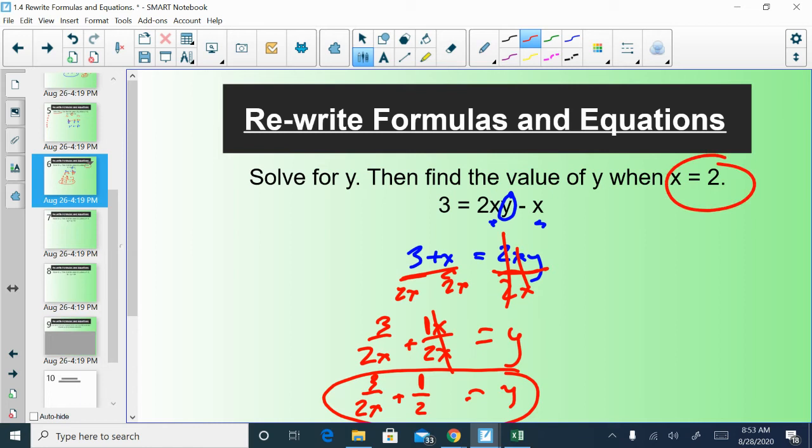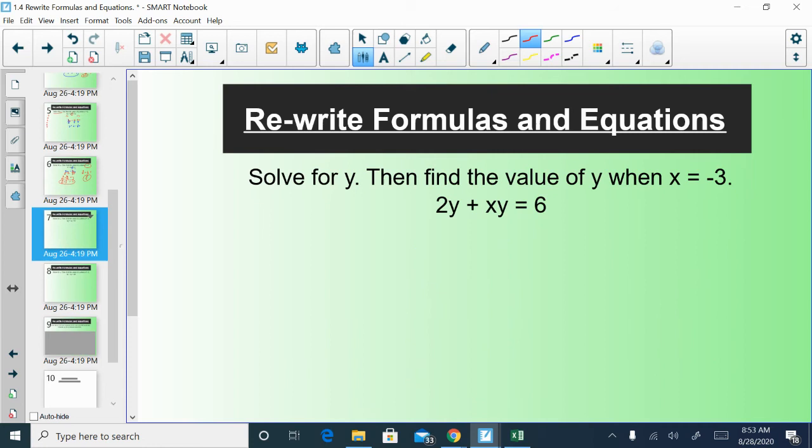Then we have to plug 2 in and see what we get for the second part of the question. What that would end up being is 3 fourths plus 1 half, right? And we could do this with our calculators or in our head. 1 half is the same as 2 fourths, right? That's an unreduced. 1 half and 2 fourths are the same. So then I could add our numerators and get 5 fourths. Like I said, you can do that in your calculator. That's totally fine.